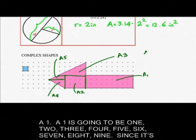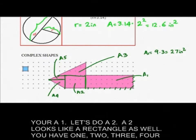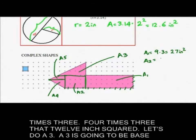So let's calculate A1. A1 is going to be 1, 2, 3, 4, 5, 6, 7, 8, 9. Since it's a rectangle, 9 times 1, 2, 3, 3. 3 times 9, 27 inch square. That's your A1. Let's do A2. A2 looks like a rectangle as well. You have 1, 2, 3, 4 times 3. 4 times 3, that's 12 inch square.